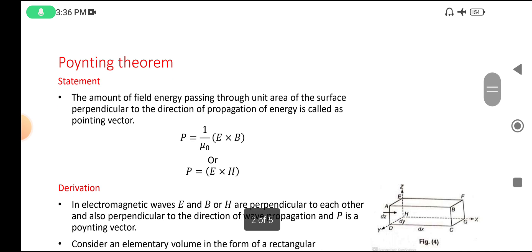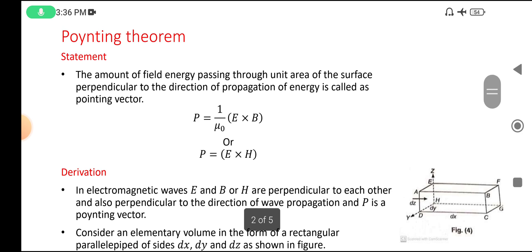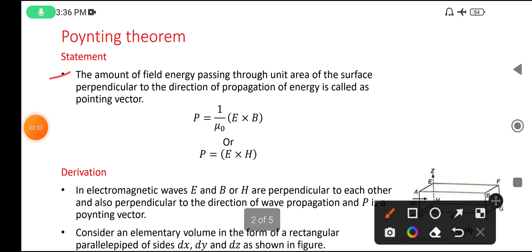Let me start with a most important theorem and lesson — that is the Poynting theorem. First, let me explain the statement of the Poynting theorem. The statement is: the amount of field energy passing through unit area of the surface perpendicular to the direction of propagation of energy is called the Poynting vector.